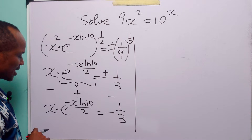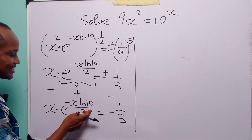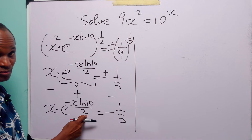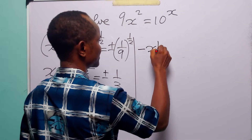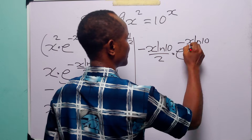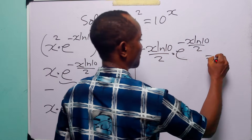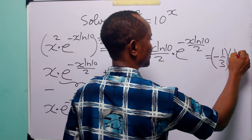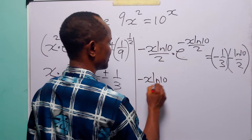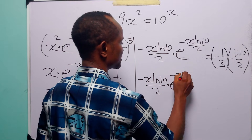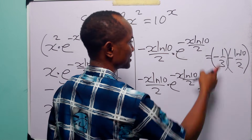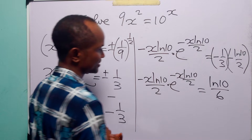The next thing we are going to do is multiply both sides of this equation by minus ln 10 over 2. When we do that, we have minus x ln 10 over 2 times e to the power minus x ln 10 over 2 is equal to minus 1 over 3 times minus ln 10 over 2. Here, minus times minus is plus, and 3 times 2 is 6, so on the right-hand side we have ln 10 divided by 6.